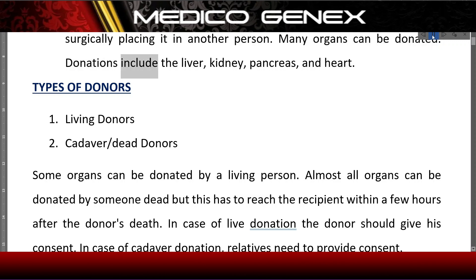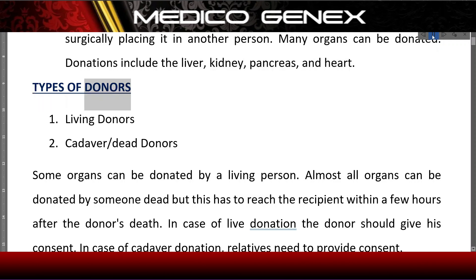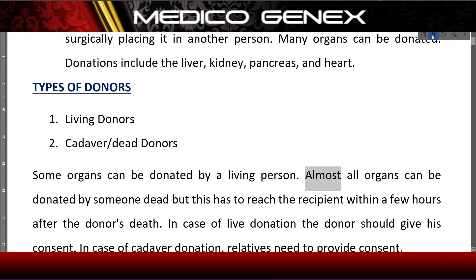Donations include the liver, kidney, pancreas, and heart. There are two types of donors: living donors and cadaver (dead) donors. Some organs can be donated by a living person, while almost all organs can be donated by someone who has died, but this has to reach the recipient within a few hours after the donor's death.